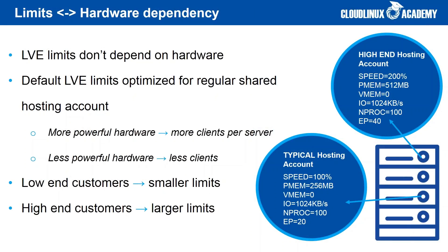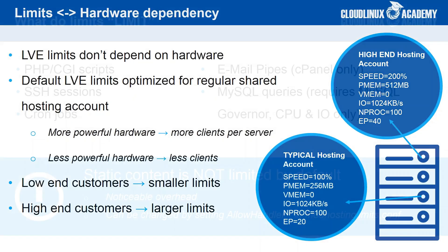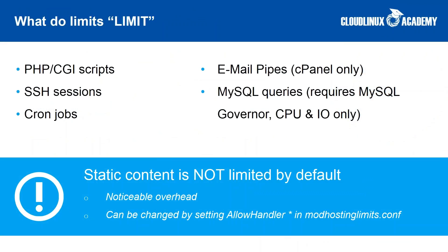LVE limits do not depend on the power of your server — they only depend on how fast you want your hosting accounts to be. Default limits are suitable for 99% of shared hosting servers. With more powerful hardware you can host more clients per server. You can see common limits for low-end and high-end customers, where the main difference is doubled CPU speed, physical memory limit, and entry processes limit. With CloudLinux you can limit PHP and CGI scripts, processes launched via SSH sessions, cron jobs, email pipes, and MySQL queues. Static content is not limited by default.